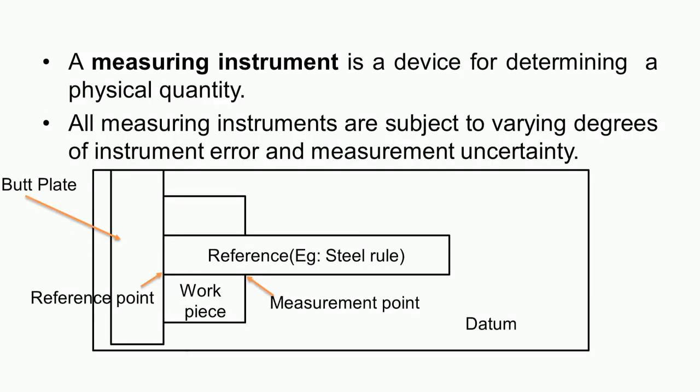In any measurement process, we have three entities: first, the physical quantity — in our example, length; second, a reference for measurement — the measuring scale; and third, the process of comparison — comparing the length of cloth with the measuring tape. Let us look at a picture to understand the measurement process in detail.